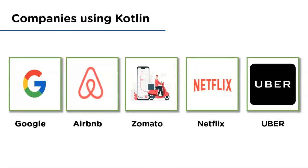Starting with Google — Google widely uses Kotlin. Not only have they declared it a first-class programming language, but they also use it in their production code. Google has implemented Kotlin in more than 60 applications such as Google Home, Google Maps, Google Drive, Google Pay, and Google Sheets.